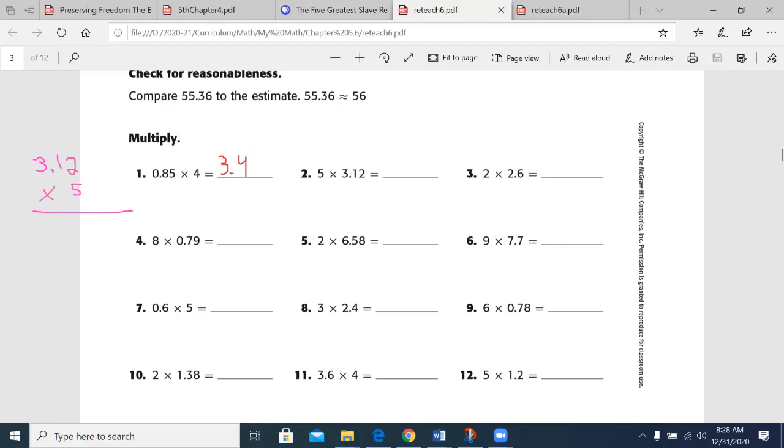Now, we begin by going 312 times 5. 5 times 2 is 10. Put a 1 up here. 5 times 1 is 5. Plus 1 is 6. 5 times 3 is 15. So, I have 1,560. But I don't. I need to have my two decimal points. 1 and 2. So, it goes over one spot and two spots. And we get 15.6.